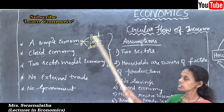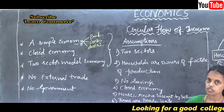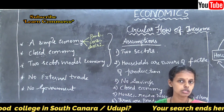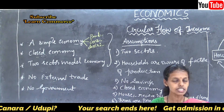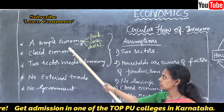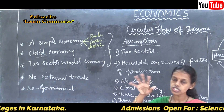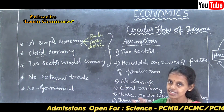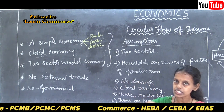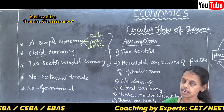Let us see the circular flow of income in a simple economy. Circular flow of income means how the income is circulating in the economy through internal trade. We are going to discuss only a simple economy, meaning a closed economic system with no external or international trade — only internal trade taking place.